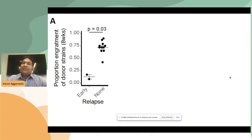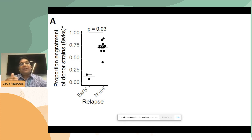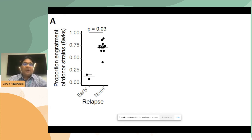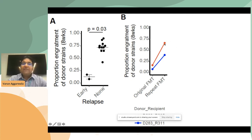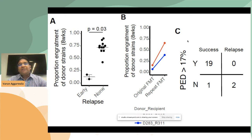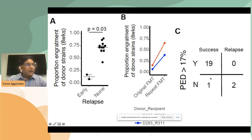Now we ask whether strain dynamics explain the clinical outcome. At the eight-week time point — when clinicians typically assess FMT success — patients without a relapse had stable and higher engraftment than patients who did relapse. When we gave a repeat FMT to relapsing patients, their engraftment significantly increased. Looking across all time points, successful FMT consistently shows total donor strain engraftment above 17%, and whenever it falls below that threshold we always see a relapse.